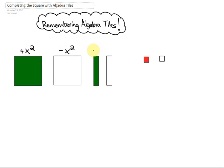The green rectangle is the positive x or the positive variable tile and the white rectangle is negative x or the negative variable tile. The small red square is the positive integer positive one and the white small square is the integer negative one.